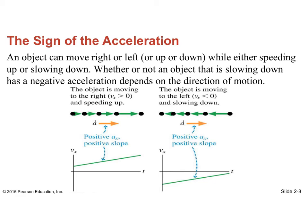To reiterate, an object can move right or left or up and down while either speeding up or slowing down. Don't like speeding up or slowing down, but either getting faster or getting slower. Whether an object is slowing down or has negative acceleration depends on the direction of motion. And they illustrate both cases here. The object on the left is moving to the right, so its velocity is positive. And it's getting faster, so its acceleration is positive. And notice that if we were to graph that, that would be a thing which starts above the axis and gets further from the axis, and therefore has a positive slope.